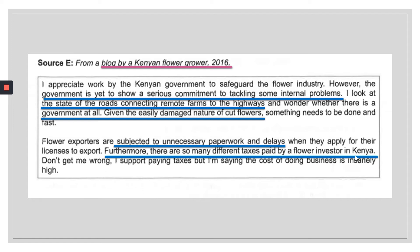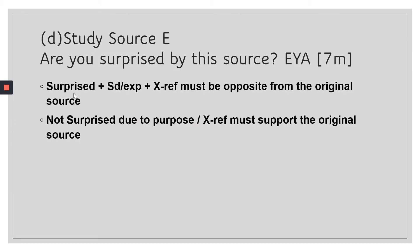Source E is a surprise question. It shows many problems in Kenya: roads not connecting to highways and airports, and excessive paperwork. This source is surprising because many other sources describe the success of the flower industry, yet this Kenyan flower grower portrays it as not thriving. Think about the blogger's motive. If it's a surprise, the source must be showing the opposite of what other sources indicate.